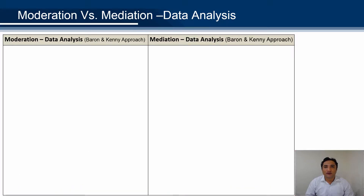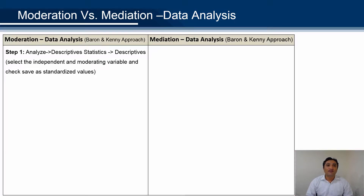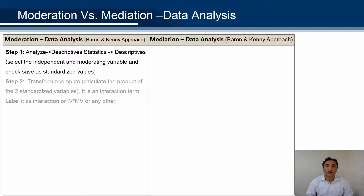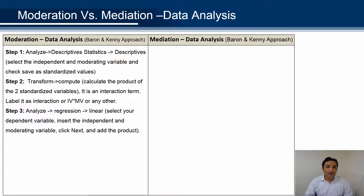Now let's discuss the steps involved in data analysis of moderation and mediation. Since the moderator interacts with the independent variable, we have to create an interaction term. The interaction term can be created by multiplying the independent variable and the moderating variable, but this will create the complexity of multicollinearity. So we have to standardize it or mean-center it. In step one, we standardize the independent variable and moderator variable. In step two, we create a new variable — the interaction term — which is the multiplication of the standardized IV and MV.